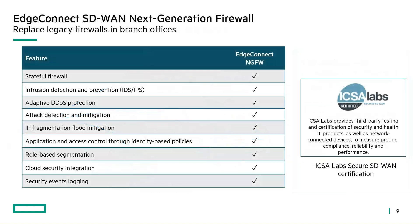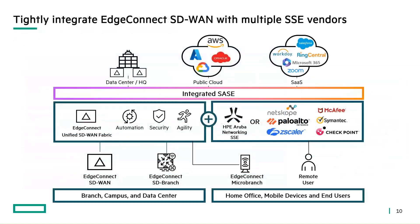This next slide highlights the advanced security capabilities within the EdgeConnect platform. We were the first vendor certified by ICSA Labs in Secure SD-WAN, tested with the same criteria used for next-generation firewalls in the industry. We have the full gamut of next-generation firewall services — stateful firewall, intrusion detection, DDoS protection, and application and access control through identity-based policies. The EdgeConnect solution also supports multiple SSE vendors. Although HPE has its own fully integrated SSE solution, you have the option to support vendors like Netskope, Palo Alto, Zscaler, McAfee, Symantec, and Checkpoint.